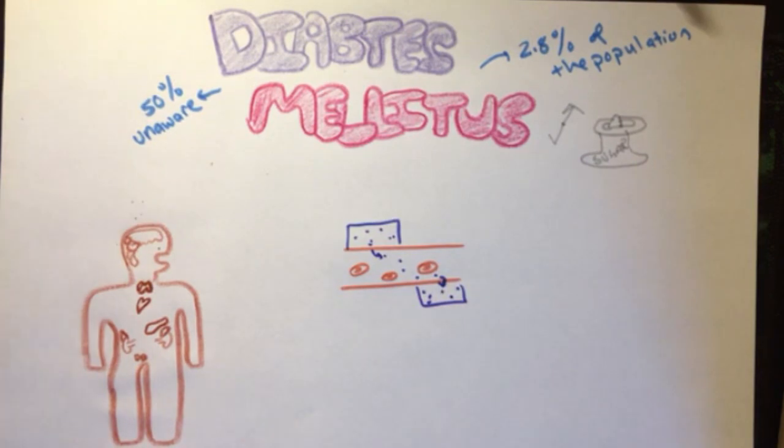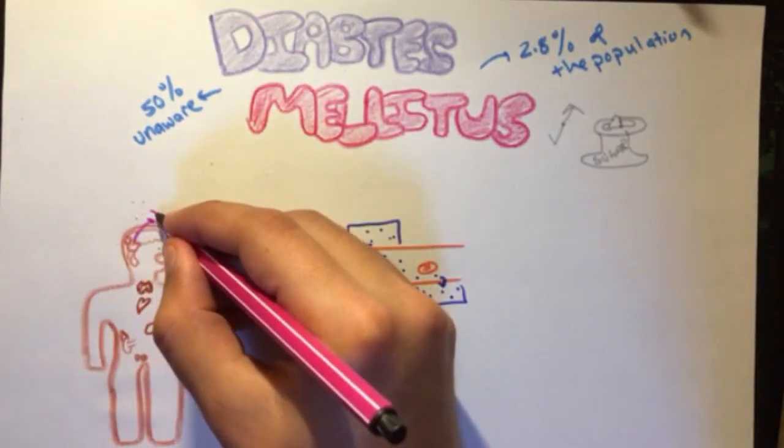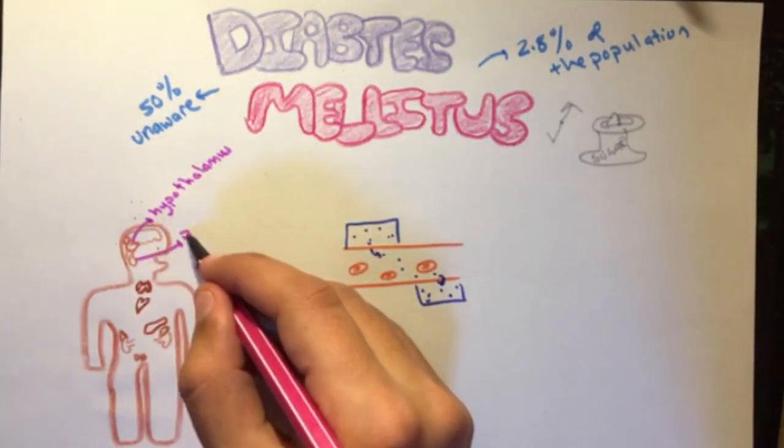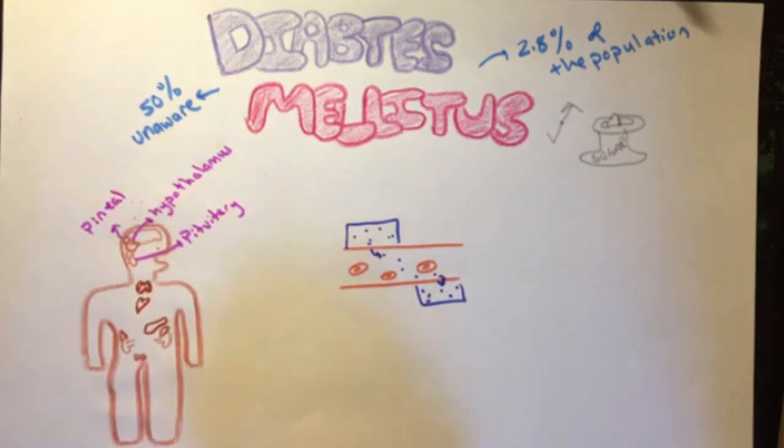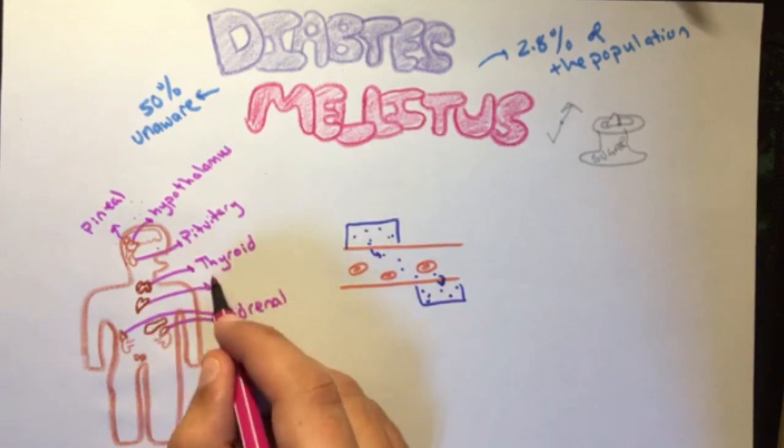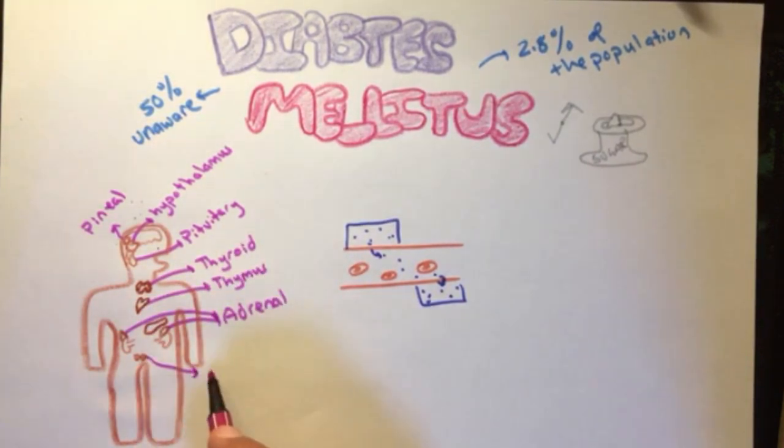The endocrine system consists of many major glands, such as the hypothalamus, the pituitary, the pineal, adrenal, thyroid, thymus, testes and ovaries, and pancreas, which is of our main concern in diabetes mellitus.